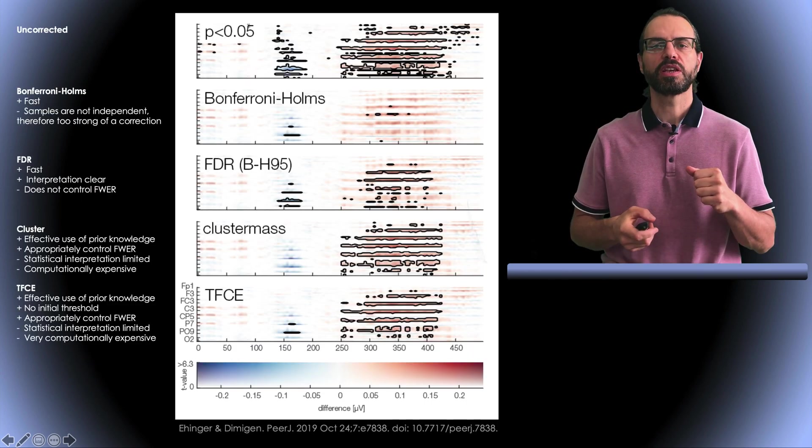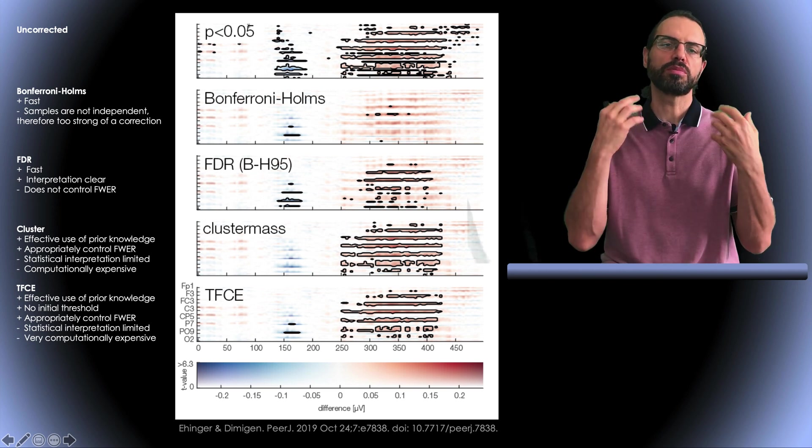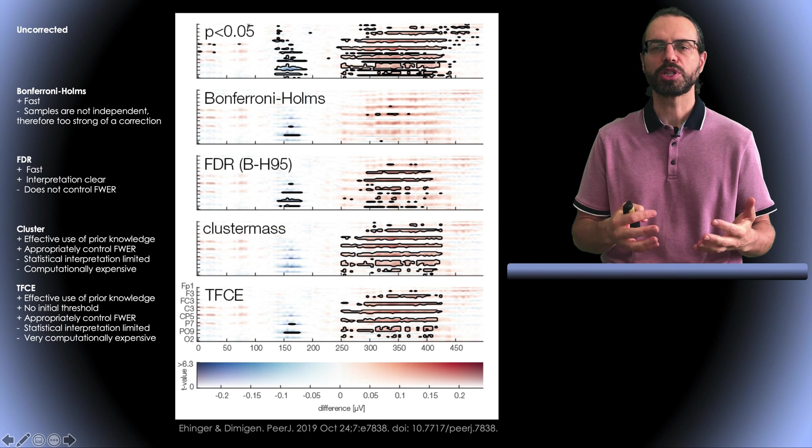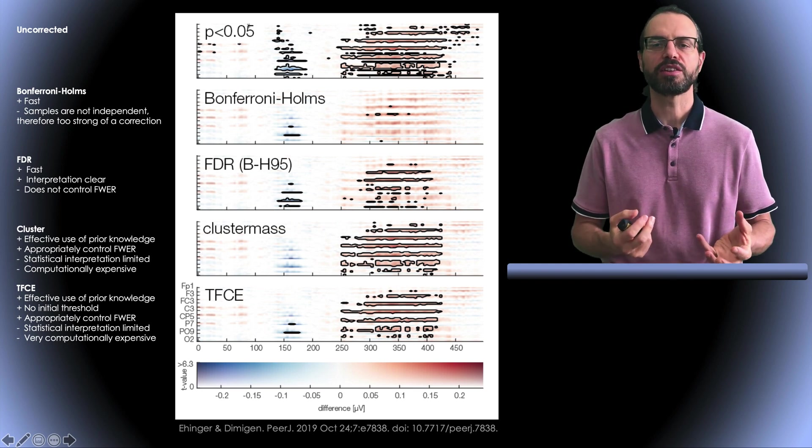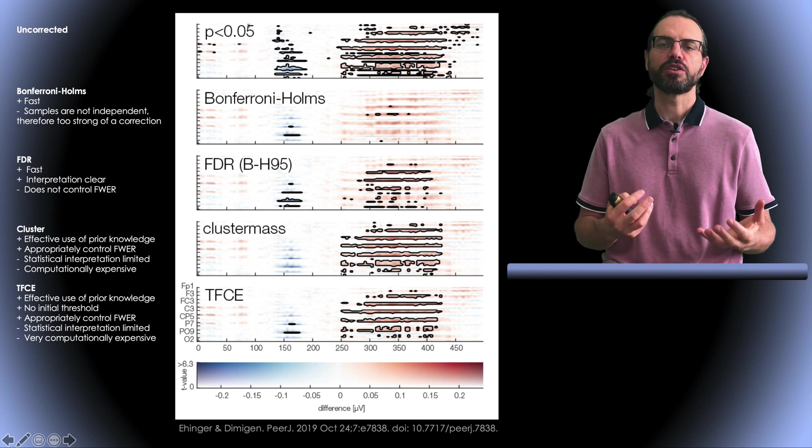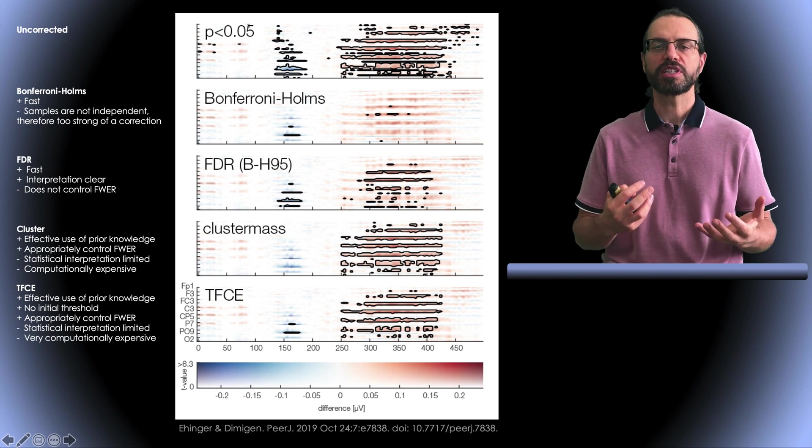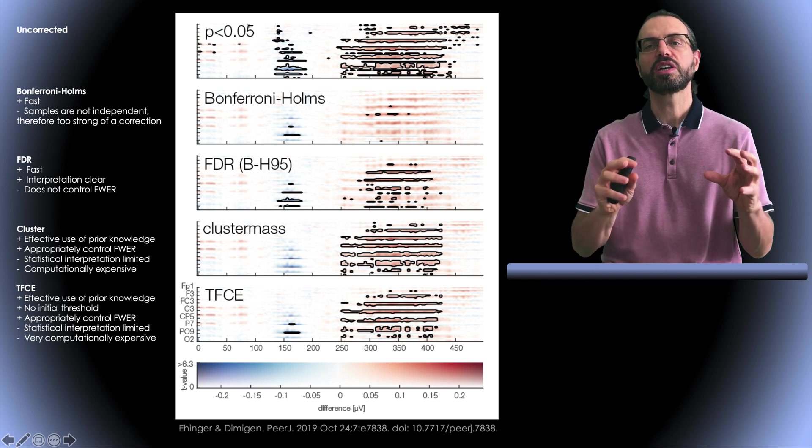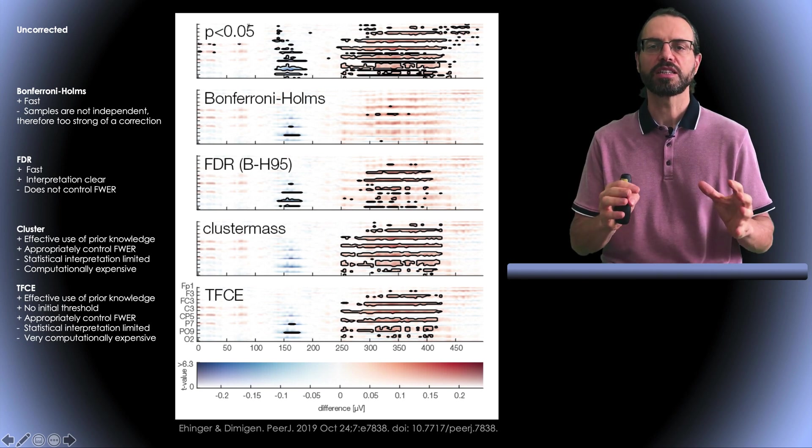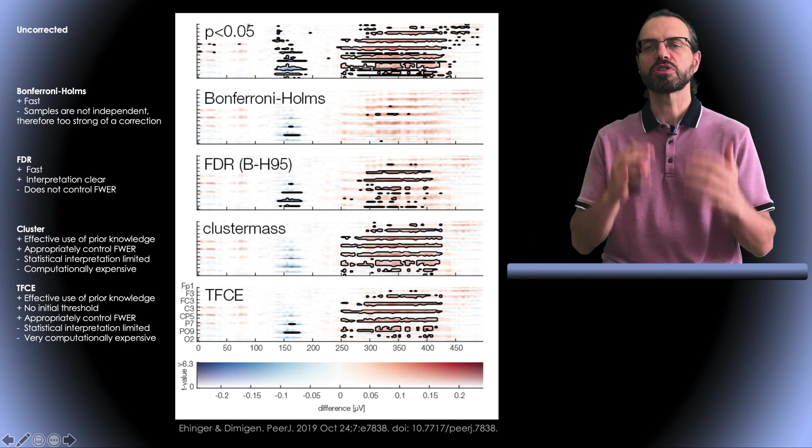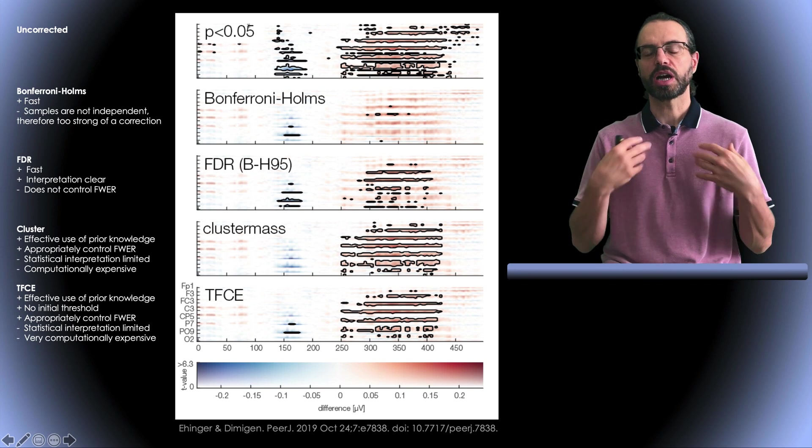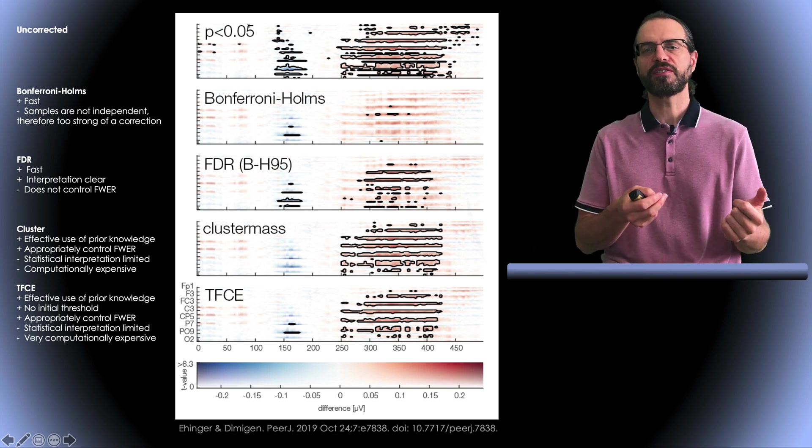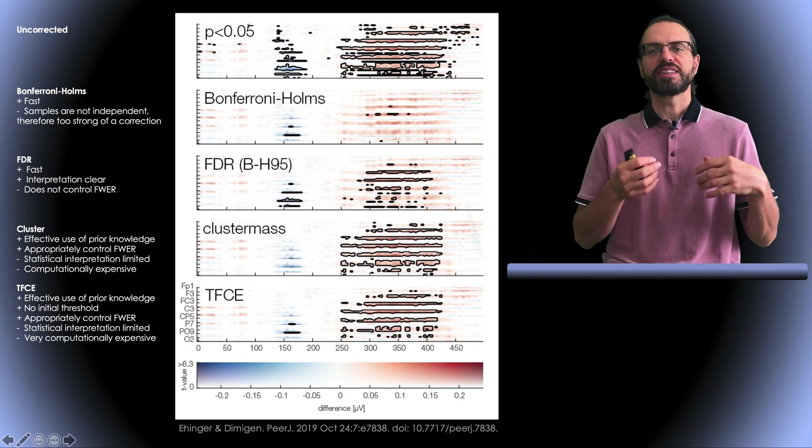So, which statistic is better? Here is a summary slide. Also, I am not including Bonferroni because Holm Bonferroni is superior without loss of generalization. Holm Bonferroni is fast, but it is too strong of a correction, especially when samples are not independent. FDR is fast to calculate and the interpretation is clear. At FDR 0.05, you should expect 5% of false positives. However, it does not control for family-wise error rates. The cluster method uses prior knowledge such as the size of the cluster. It is also approximately controlled for family-wise error rates. However, one must be careful of interpreting results as one may only draw conclusions about the clusters and not the original values. It is also computationally expensive. Finally, the threshold-free cluster enhancement technique has similar advantages to the cluster method without having to choose a statistical threshold. It takes even longer to calculate though. If I had to choose one, I would choose this last technique and I illustrate how to use it on EEG in one of the videos using the LIMO plugin.